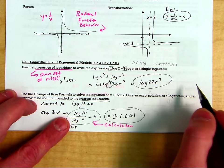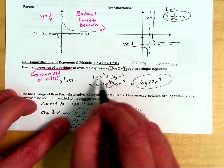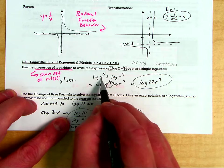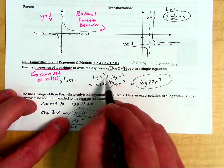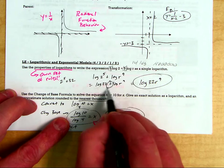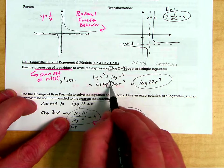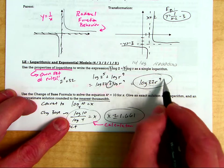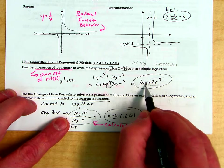That is incorrect. That constant out in front of log jumps in to be an exponent on the argument. 2 to the 5th power is 32. The product property of logarithms says if I'm adding logs, I can multiply the arguments together and write it as a single logarithm.